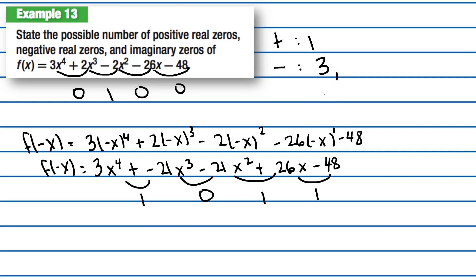And because it's higher than 1, we're going to go ahead and subtract it by 2. So 3 minus 2 is 1. If I had, let's say, 5 negative real zeros, then it would be 5, 3, and then 1. If I had 4 negative real zeros, then it would be 4, 2, and then 0.